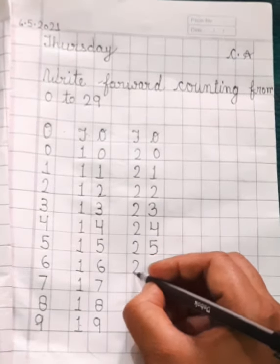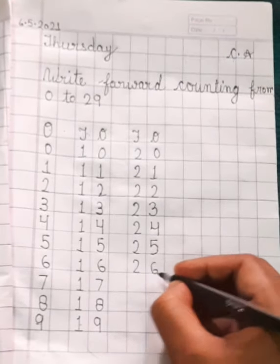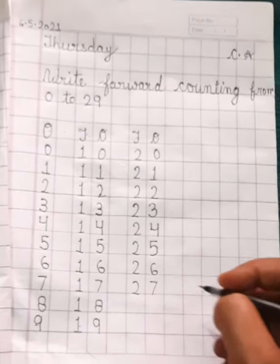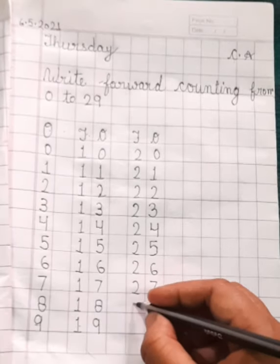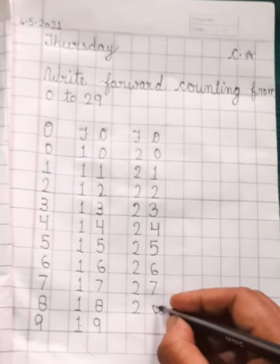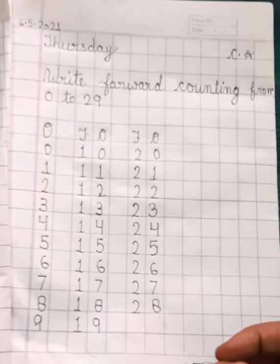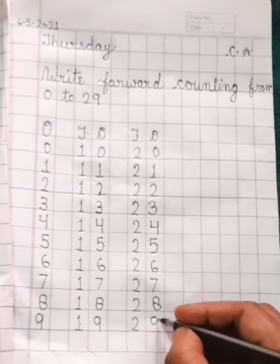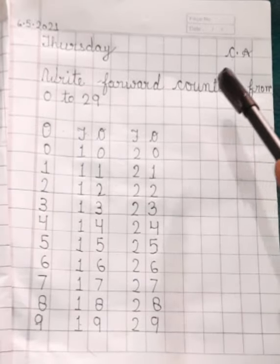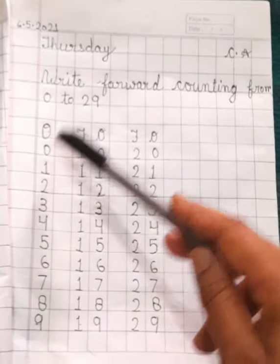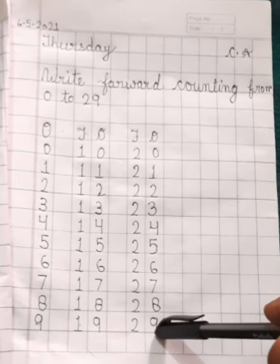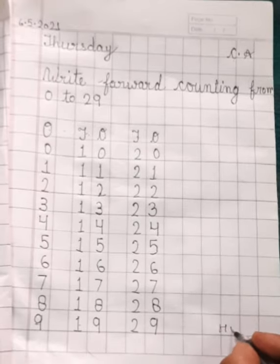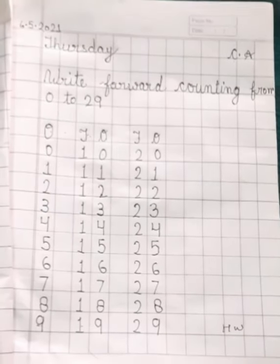Now twenty six, twenty seven, twenty eight, and twenty nine. You will write forward counting zero to twenty nine in your fair notebook.